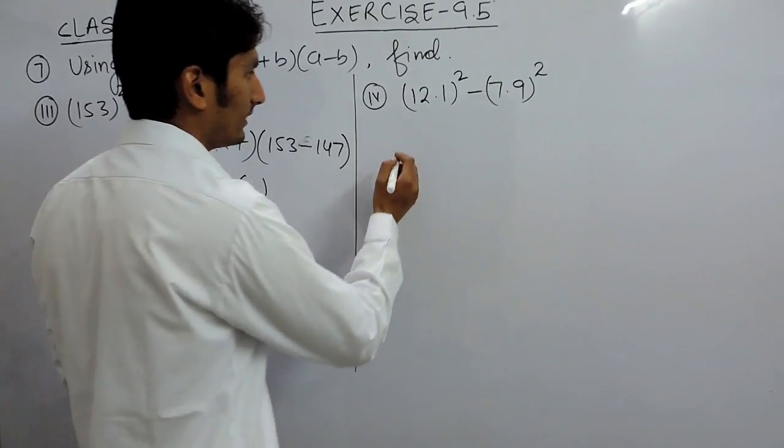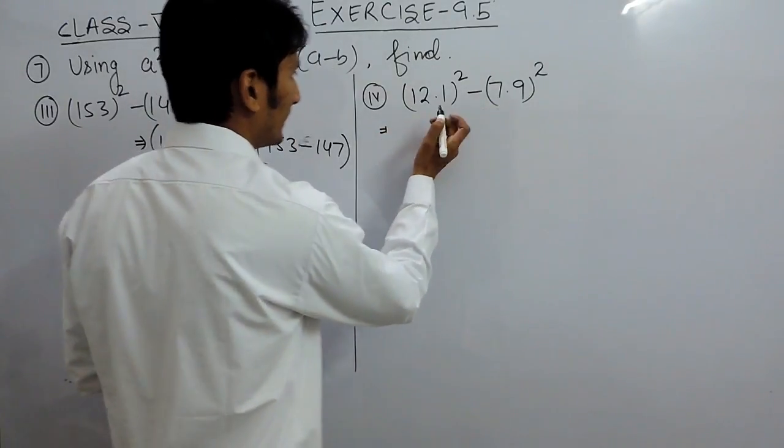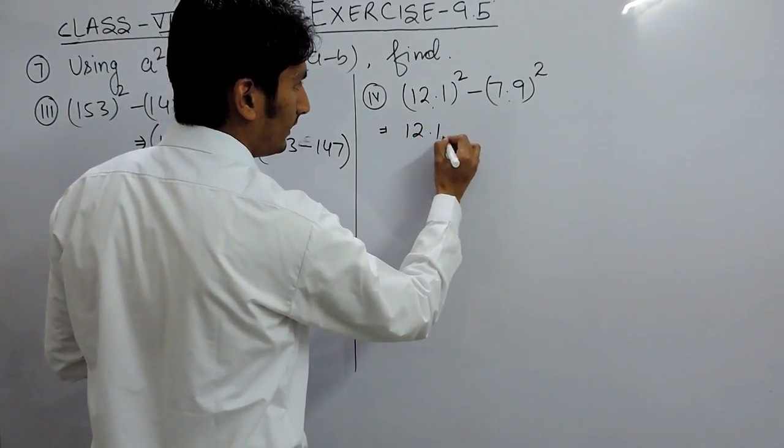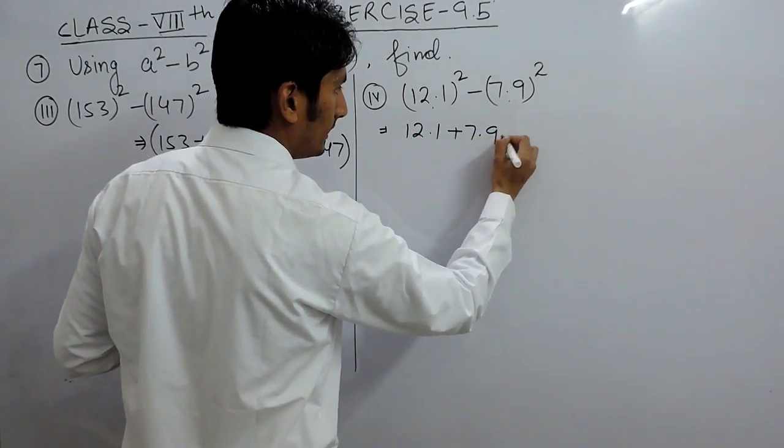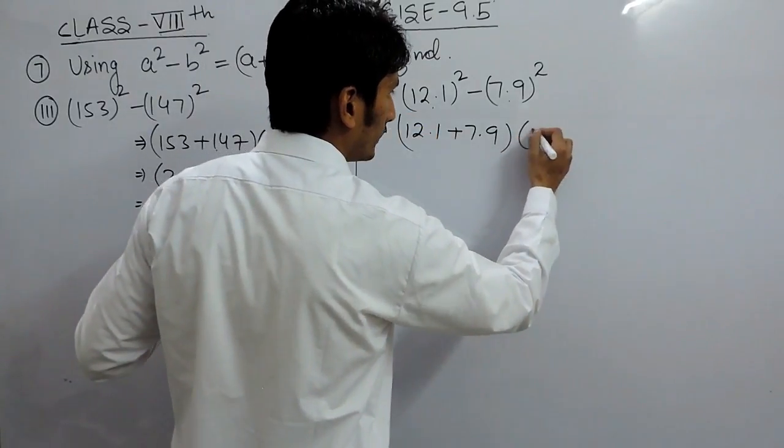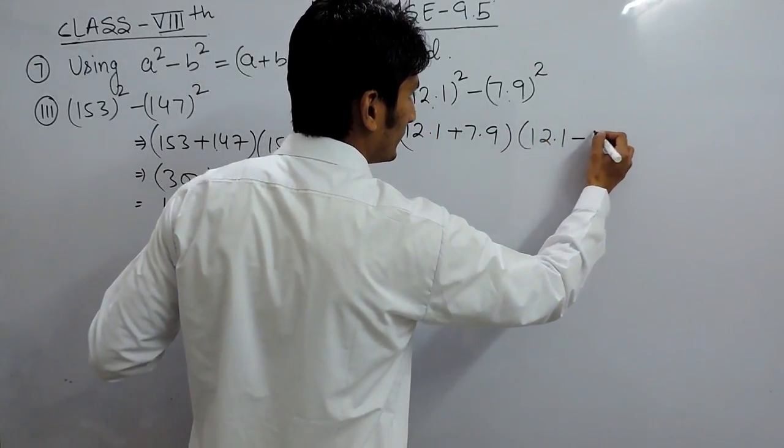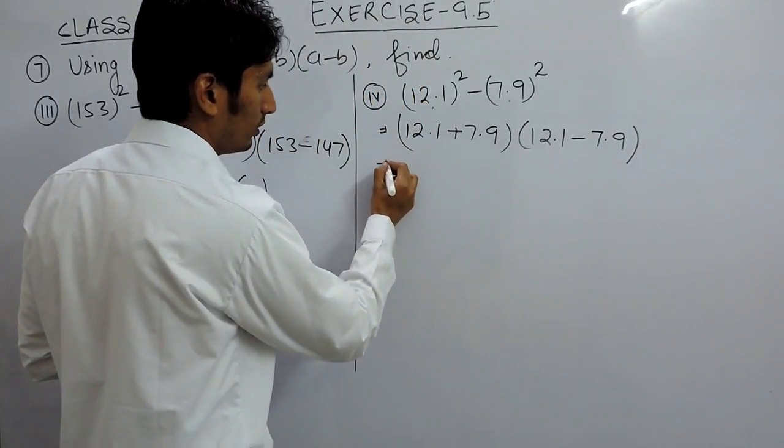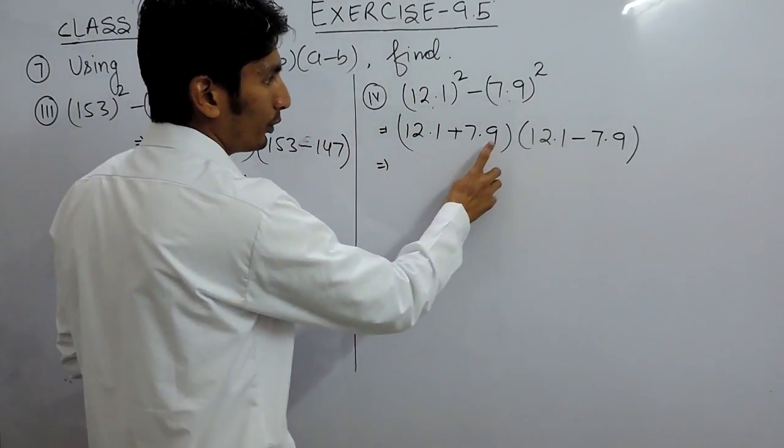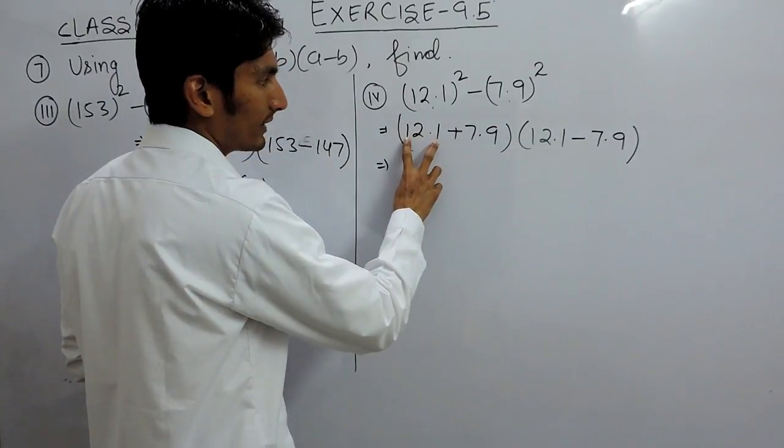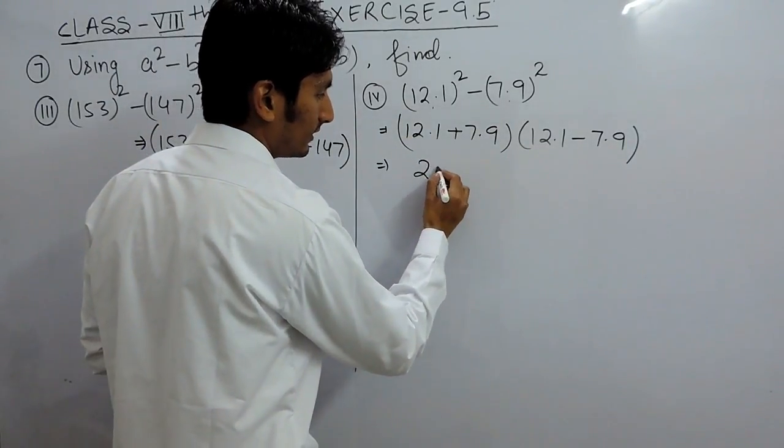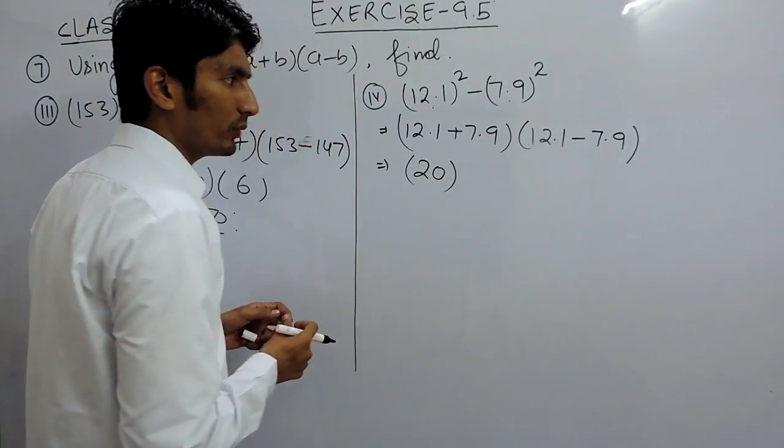Now again, this is a² - b². So this should equal (a+b)(a-b). Now, if you add 0.9 to this, this will become 13. And 13 plus 7 is 20. So this will be 20.